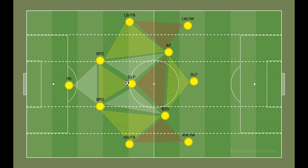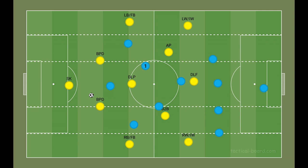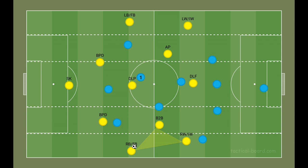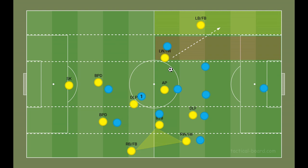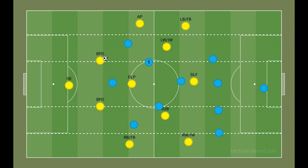We look to overload one side of the pitch to progress play. By encouraging the defending team to naturally shift over to defend that side, we leave a player on the opposite side of the pitch unmarked for a quick switch of play. On the flanks, there's also an emphasis on rotations between the inverted winger, central midfielder and full backs.